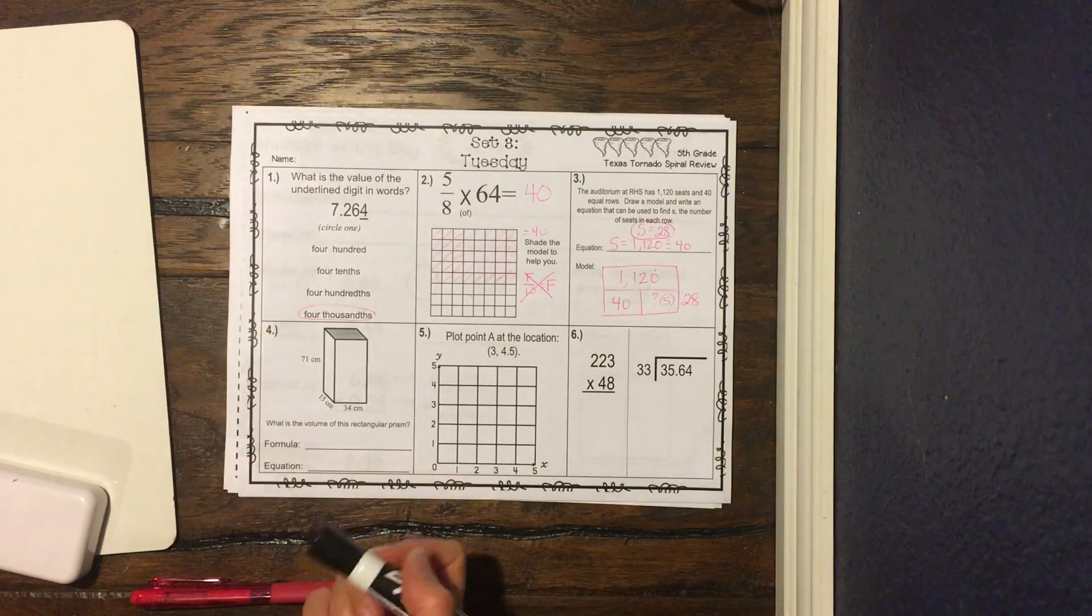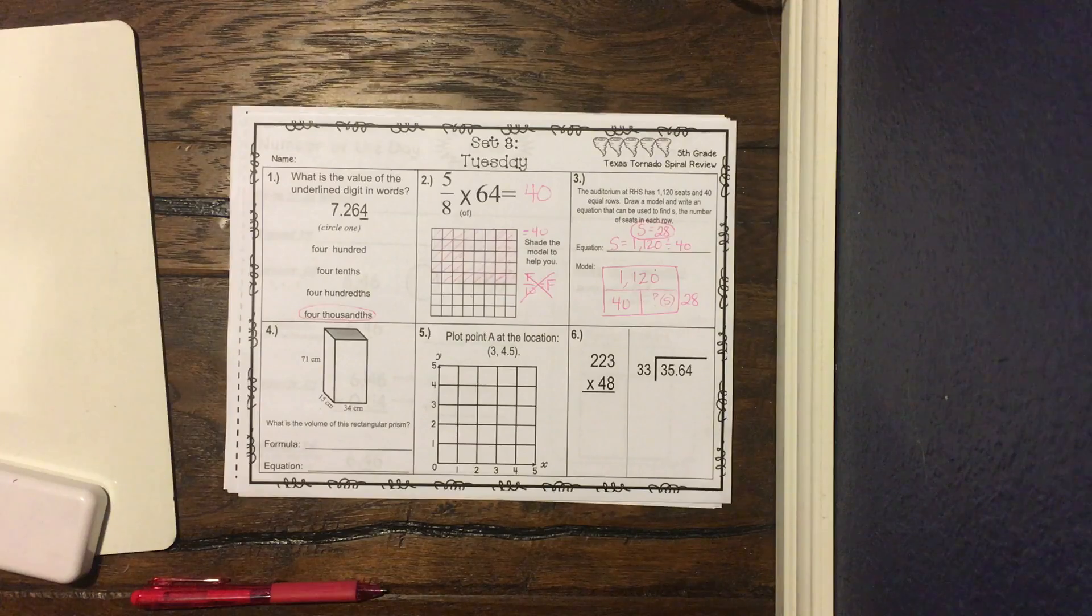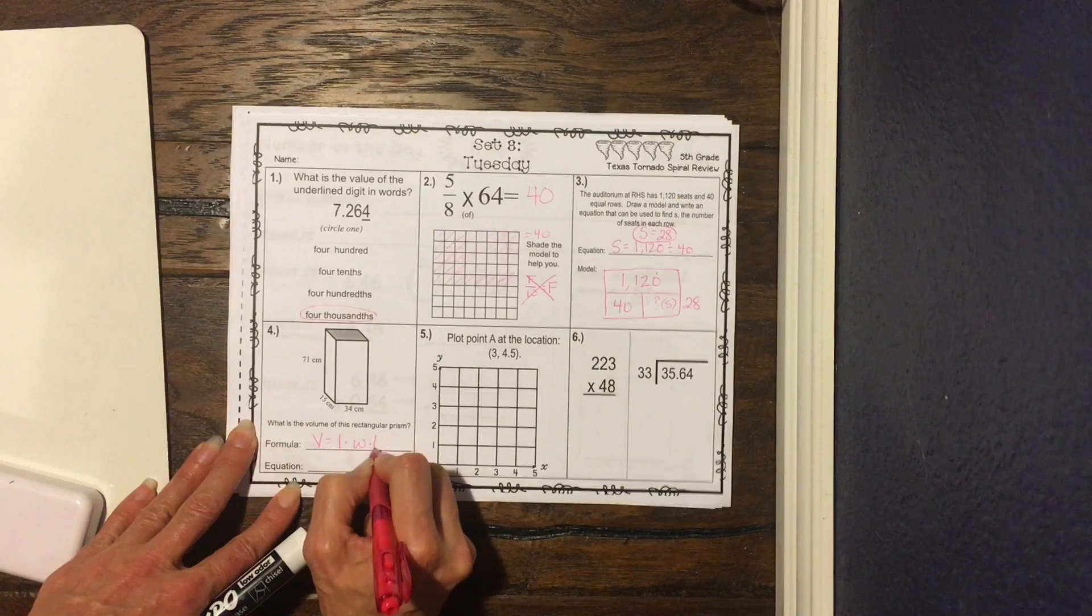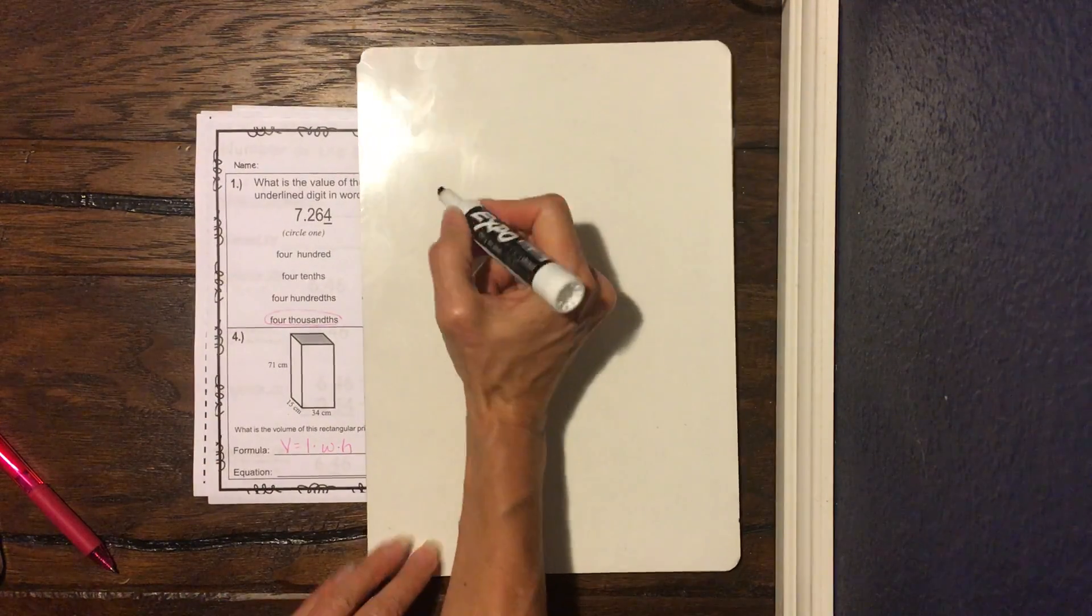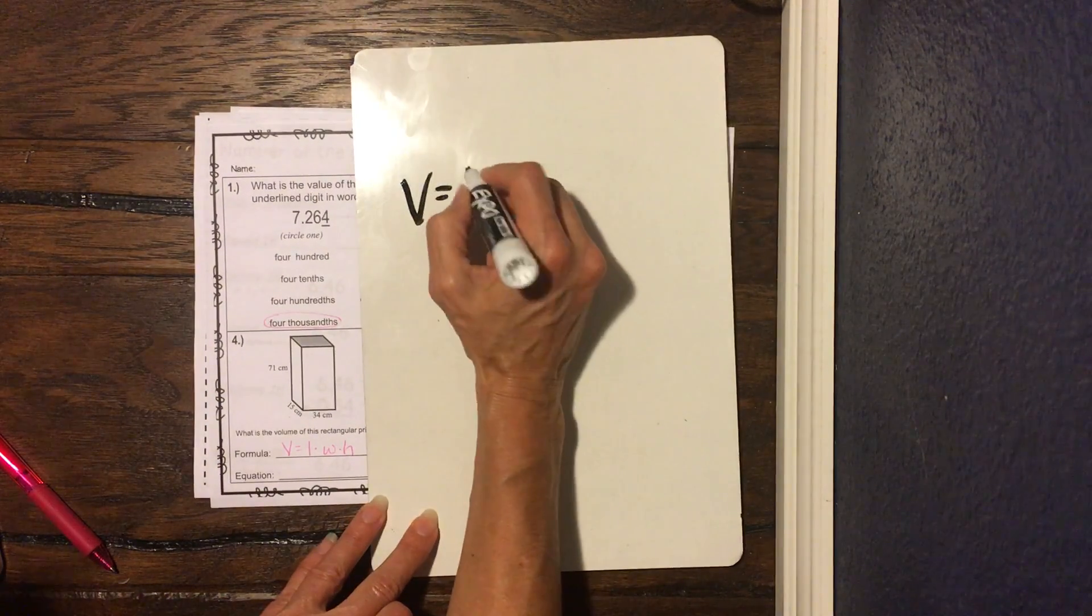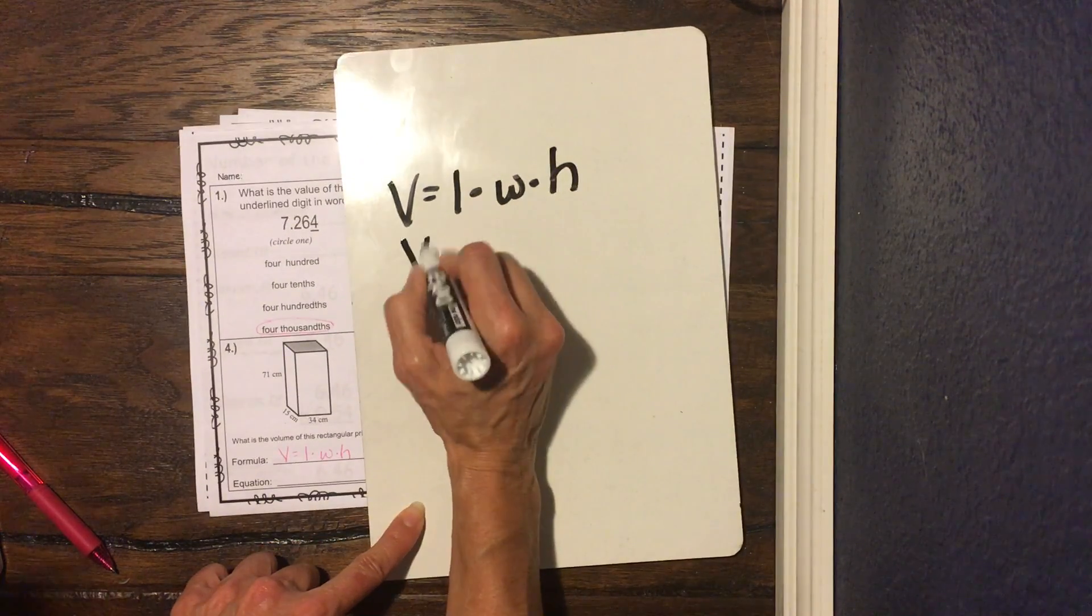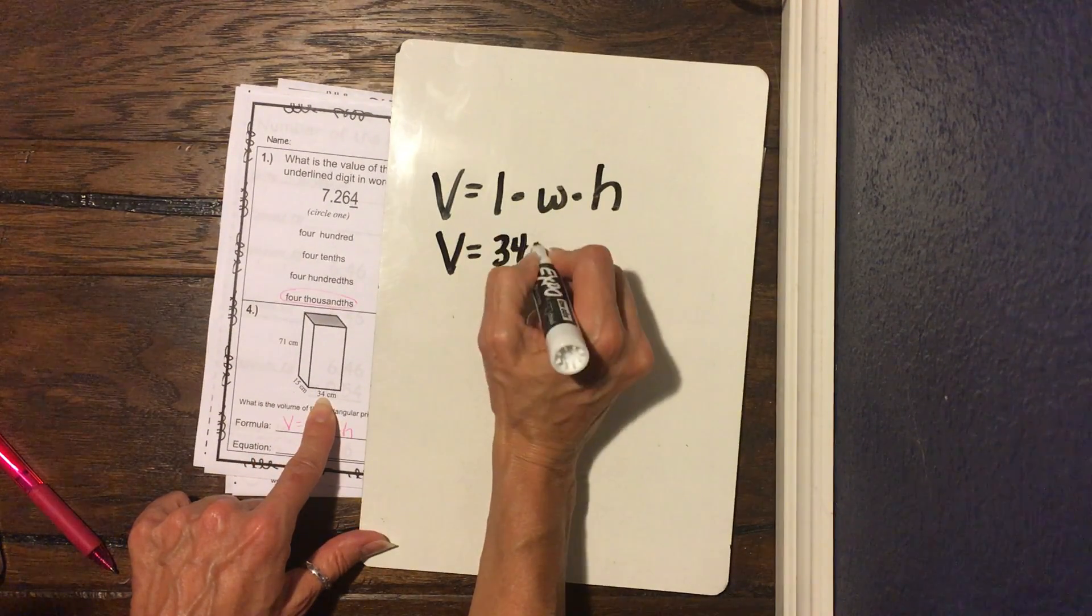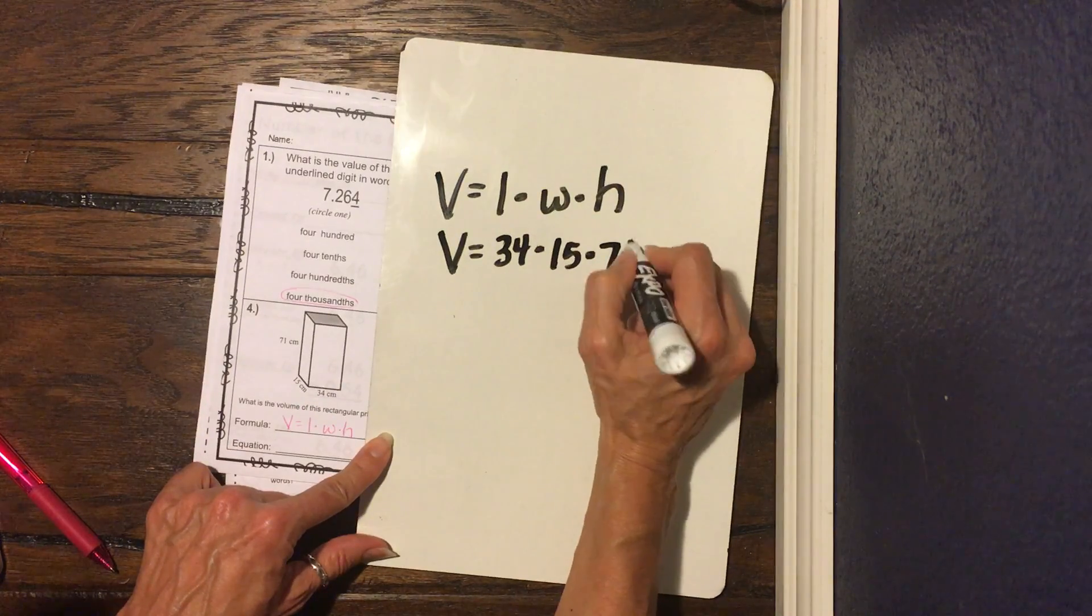Well, we don't have our base. We've been given our length, width, and height, so we're definitely gonna use that formula. So we're gonna use volume equals length times width times height, and then we're going to figure it out. So we're gonna do volume equals length times width times height. We don't know the volume, so we're gonna bring down our V. Our length is gonna be 34. Our width is gonna be 15. And our height is gonna be 71.